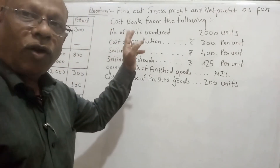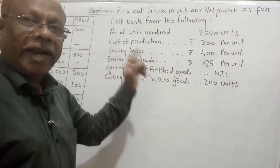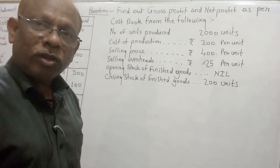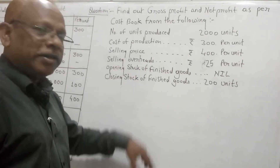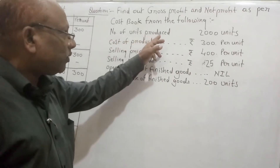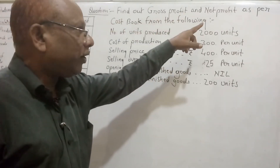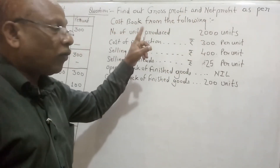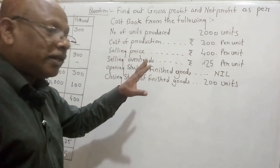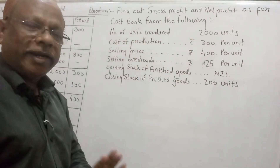I have given some information on the board regarding the quotation for tender. We have to find out the gross profit and net profit. The task is: find out gross profit and net profit as per the cost sheet from the following information. The number of units produced is 2000 units.